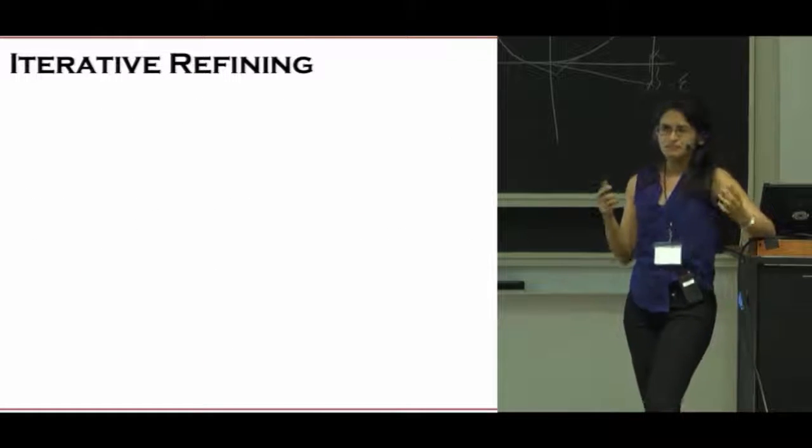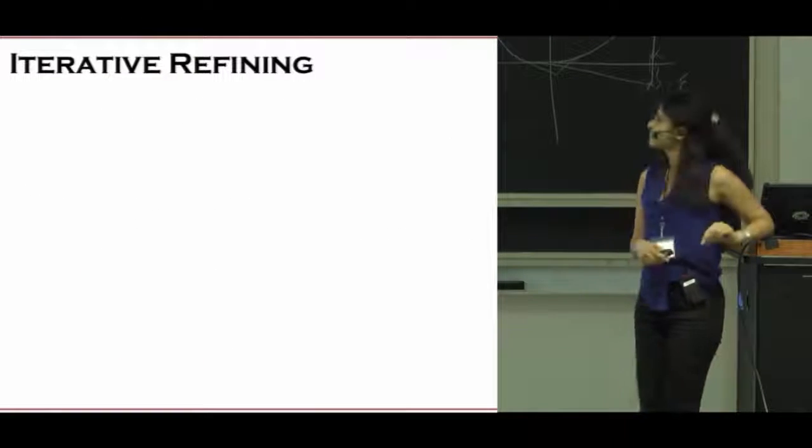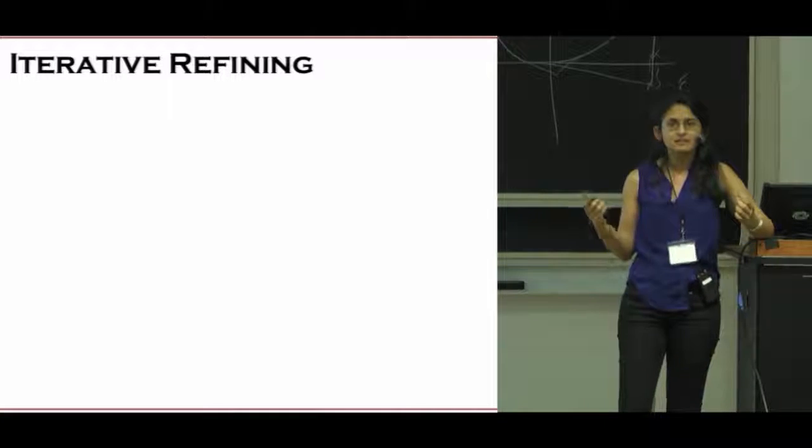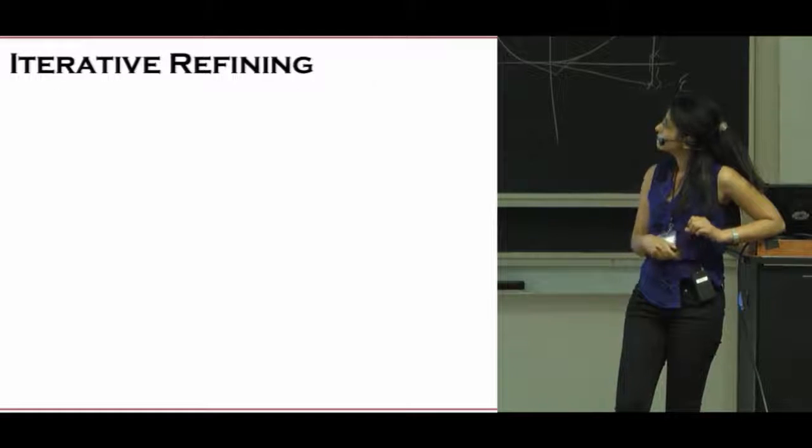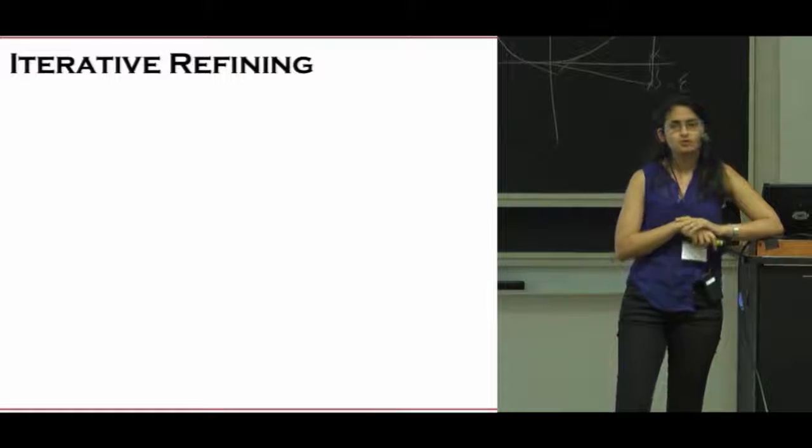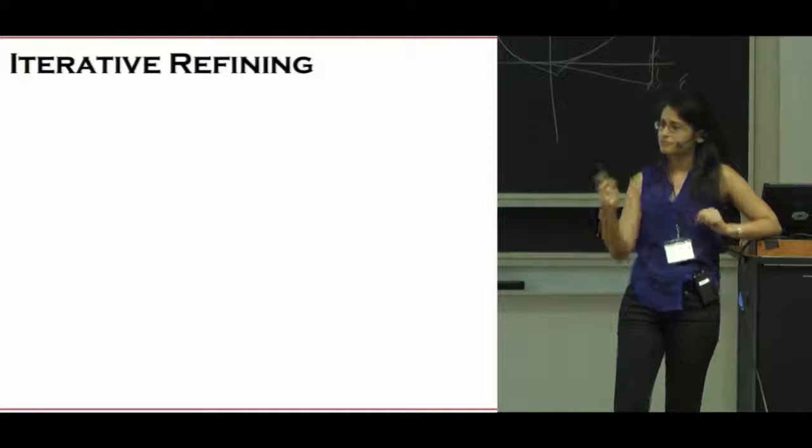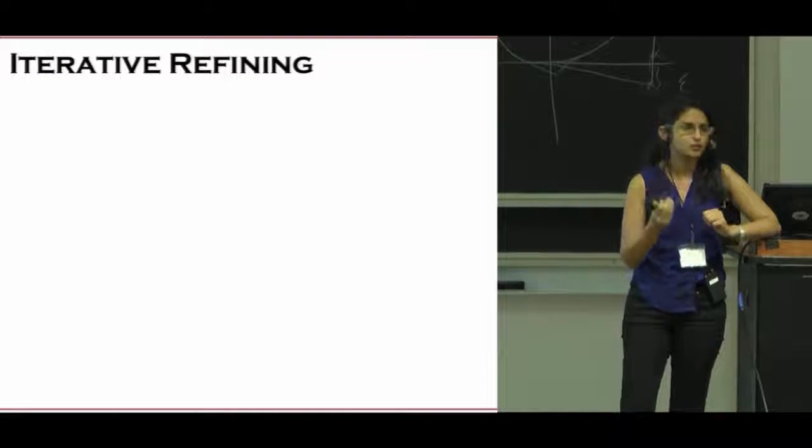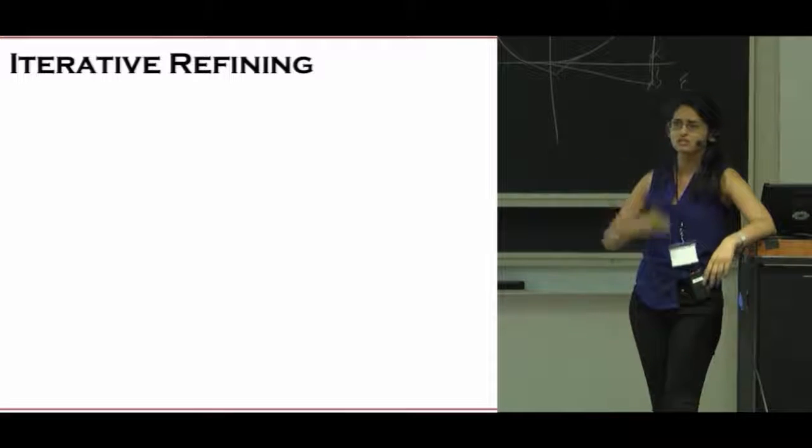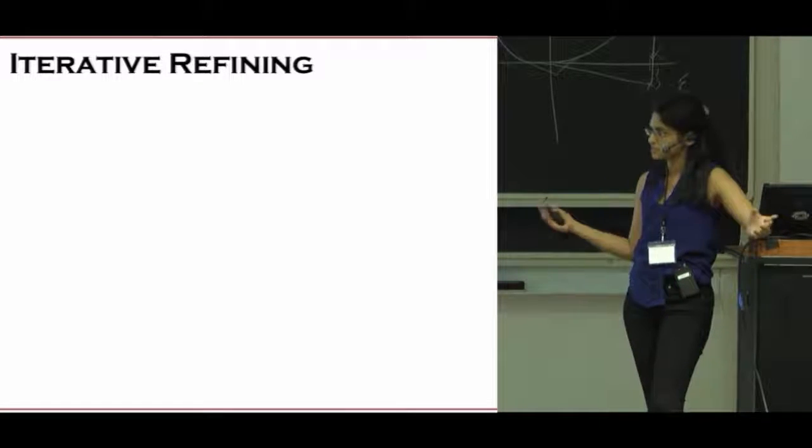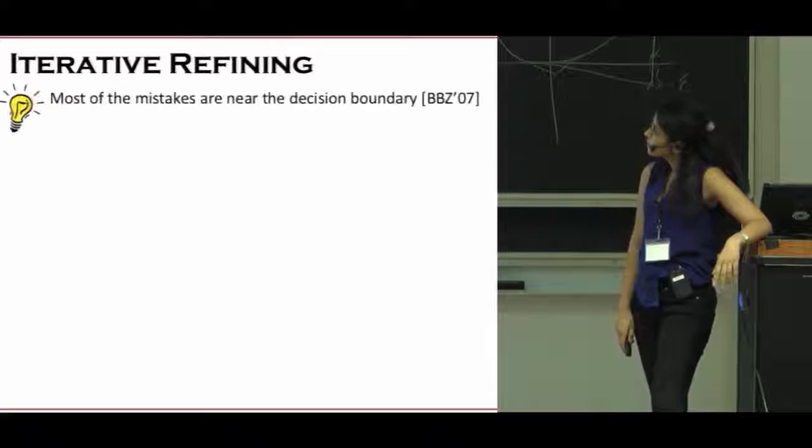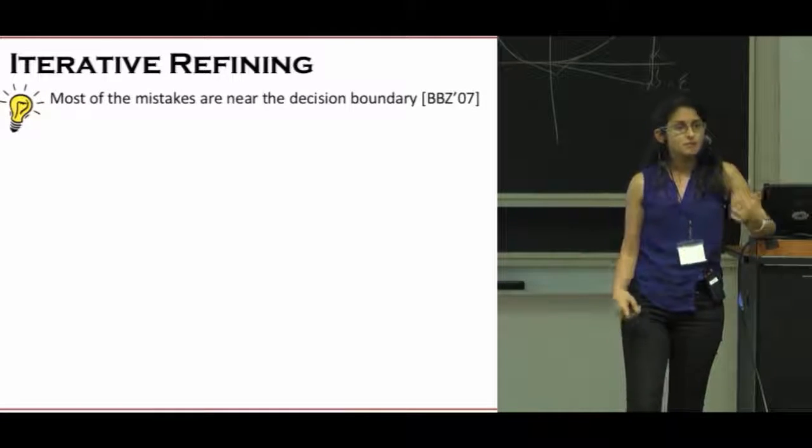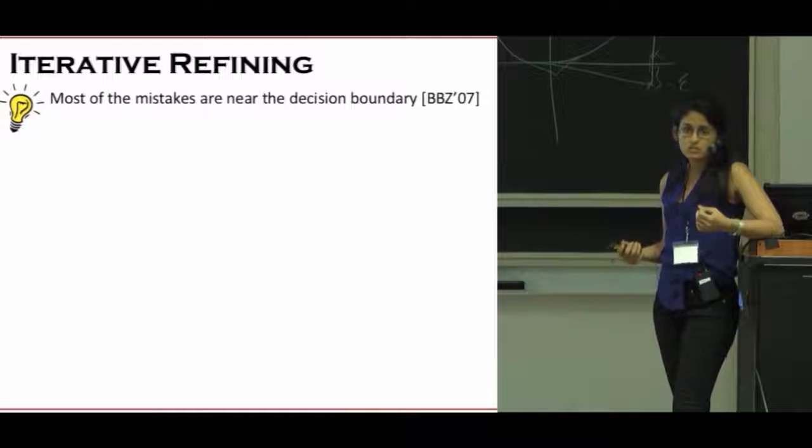I want to give you a flavor of some of our techniques. We are going to use an iterative refining technique, which means that for any half-space, whatever error it has, we are going to try to improve that error and repeatedly do this until we have a half-space of some nice error.